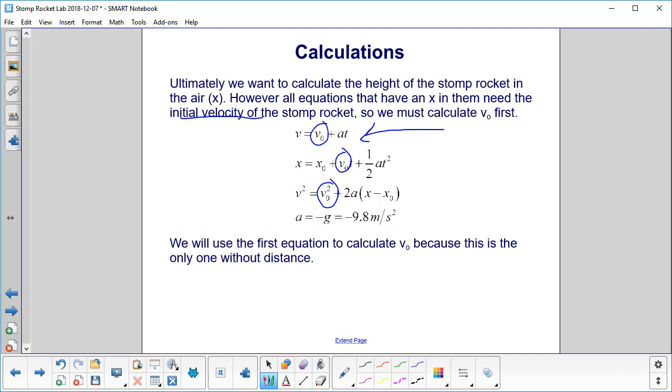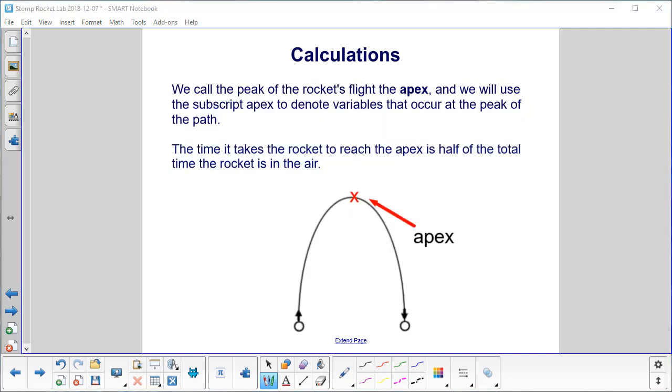We'll use the first kinematics equation here to calculate v0 because this is the only one without a distance in it. The peak of the rocket's flight is the apex. We'll use the subscript apex to denote variables that occur at the peak of the path. The time it takes the rocket to reach the apex is half of the total time the rocket is in the air. Now we're drawing the pictures like this, but in reality we want the rocket to go straight up and come straight down. But this makes it a little easier to see what's going on. But again, please shoot the rocket straight up.